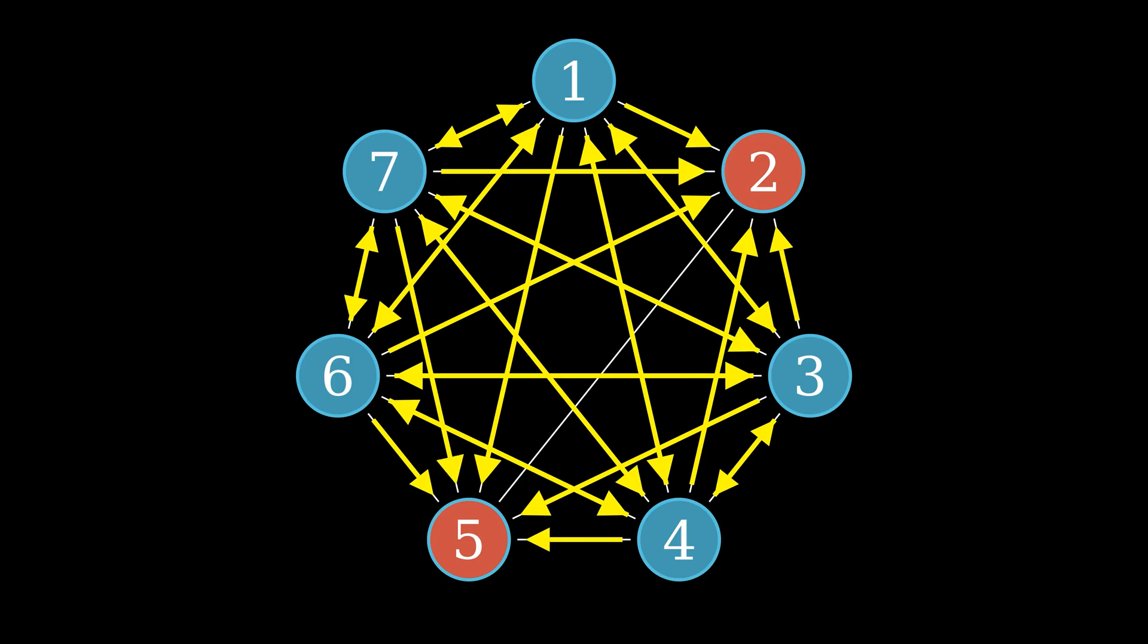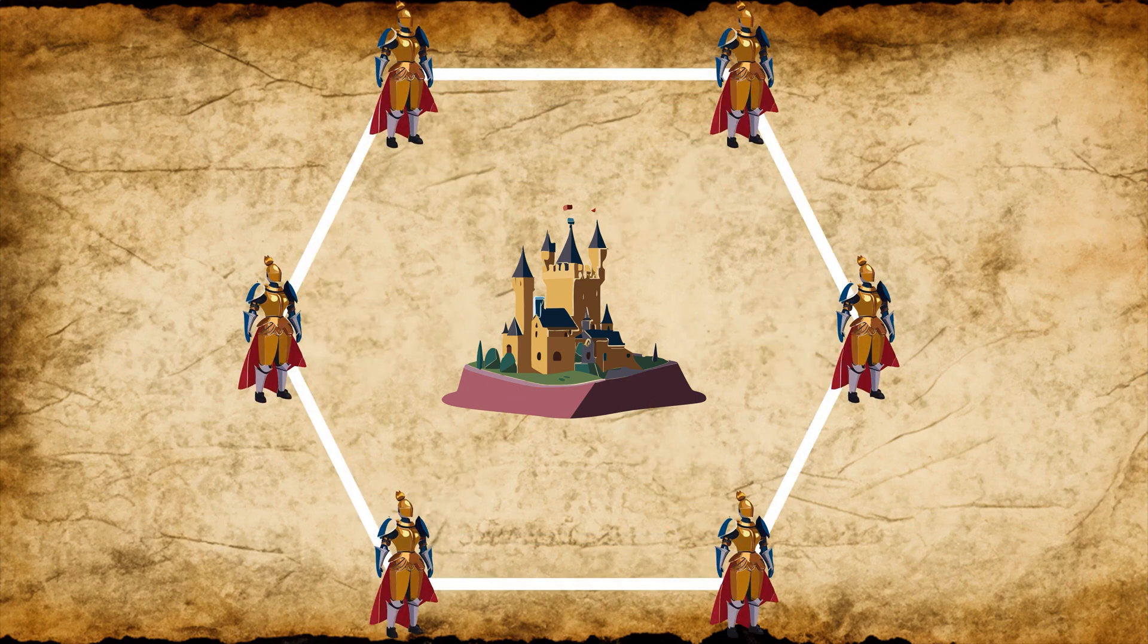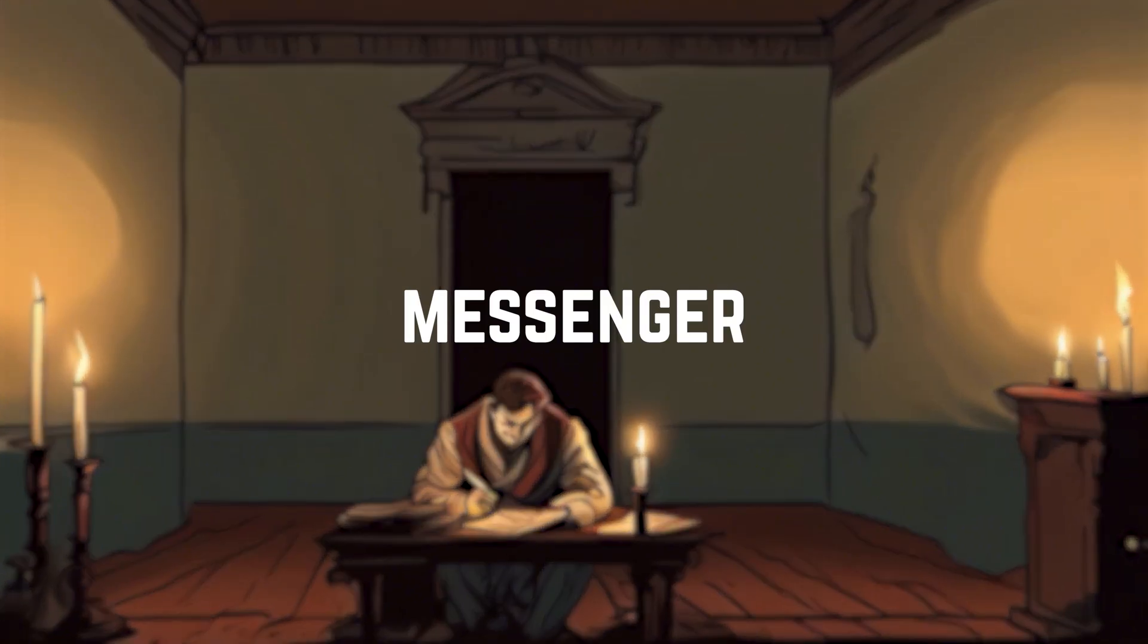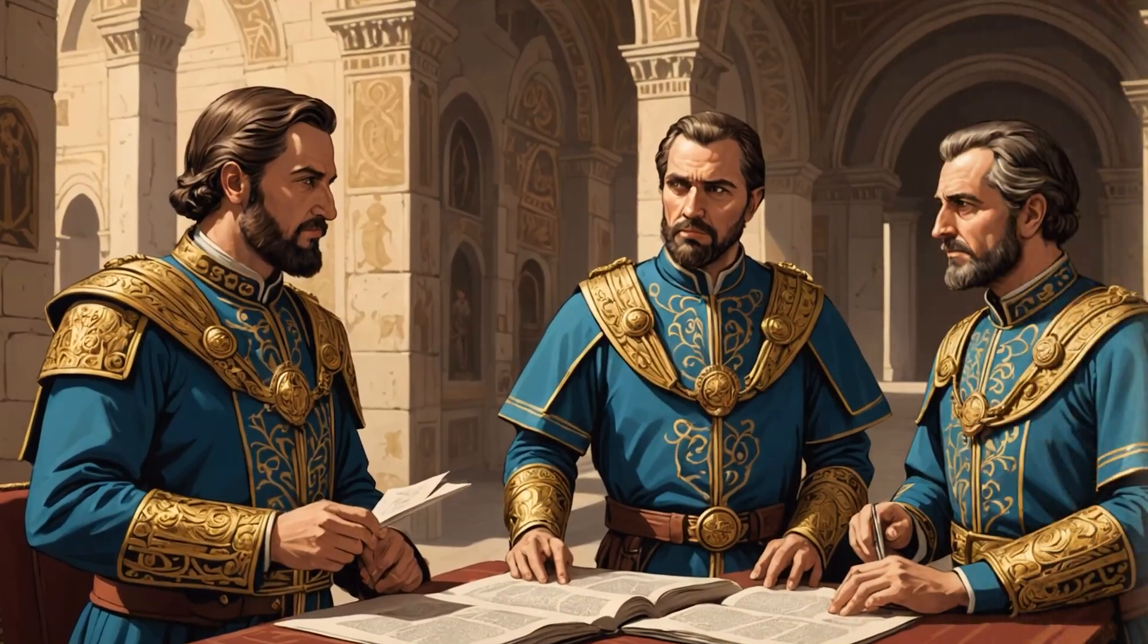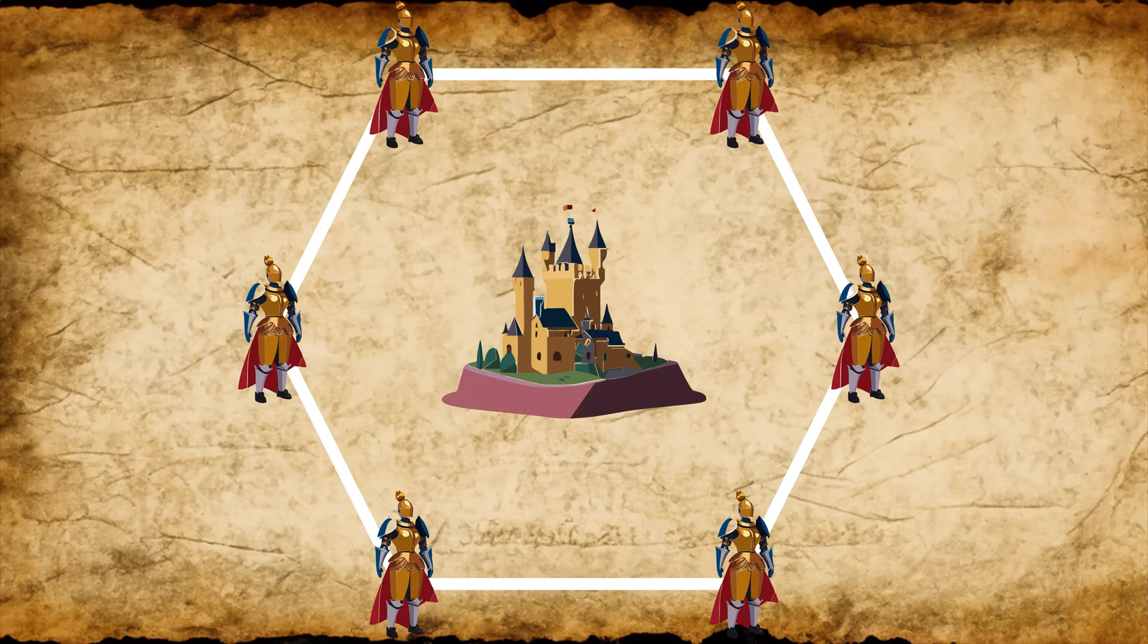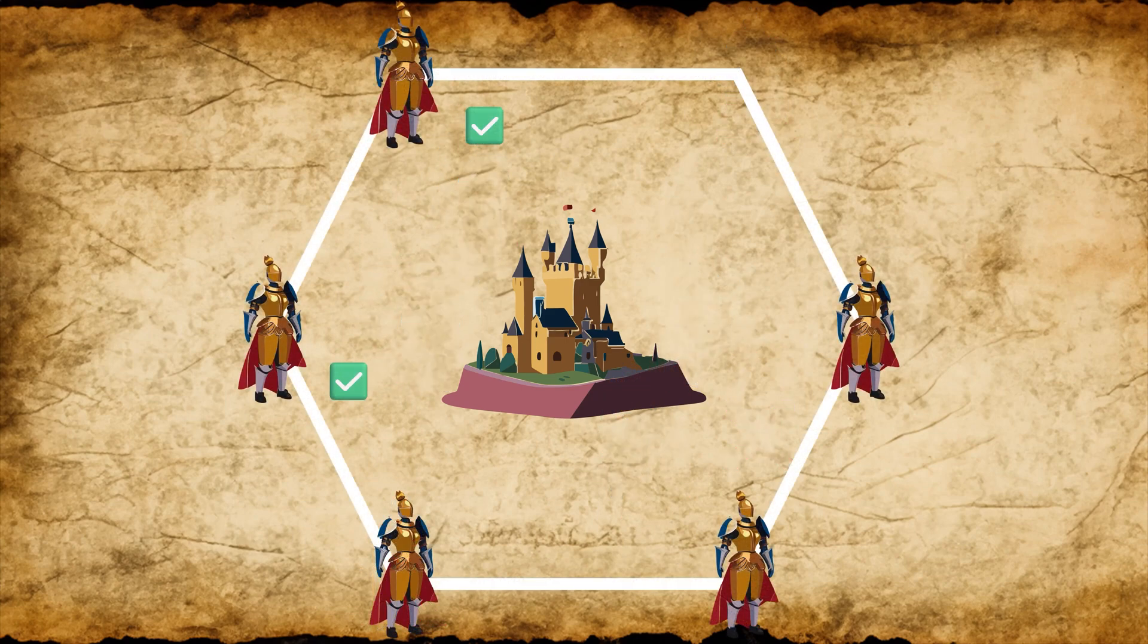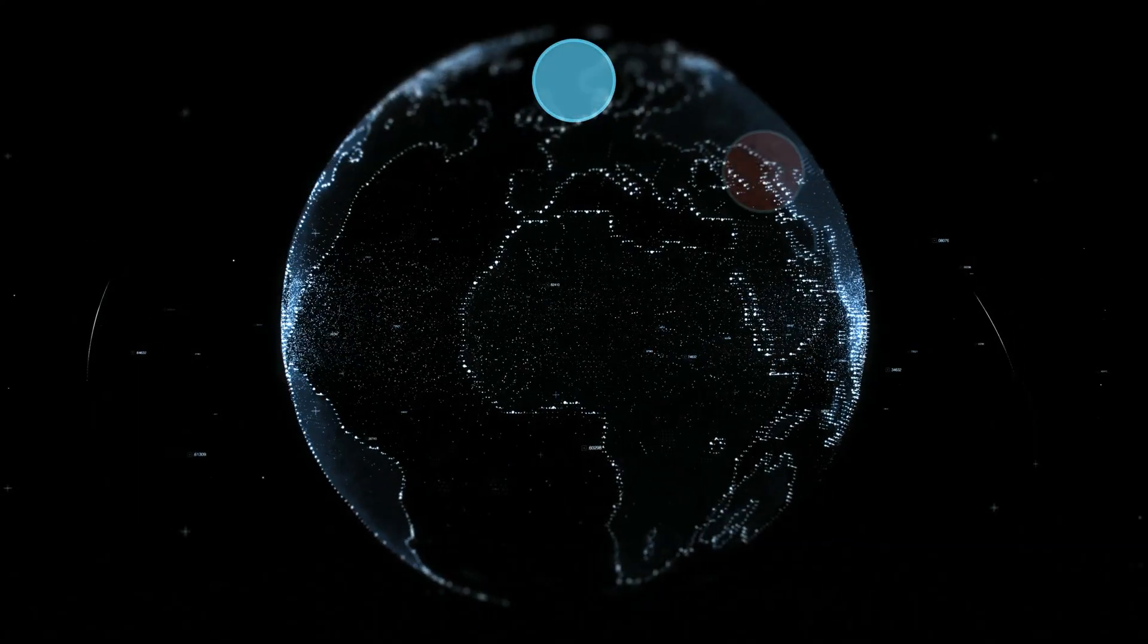Here's the breakdown: imagine a few divisions of Byzantine army are camped outside an enemy city, each division commanded by its own general. The generals can communicate with one another only by messenger. After observing the enemy, they must decide upon a common plan of action. However, some of the generals may be traitors trying to prevent the loyal generals from reaching agreement. If there are traitors inside, the attack will fail. So to assure to win the battle, they need to find a way to confirm everyone is loyal. This is an analogy in cryptocurrencies.